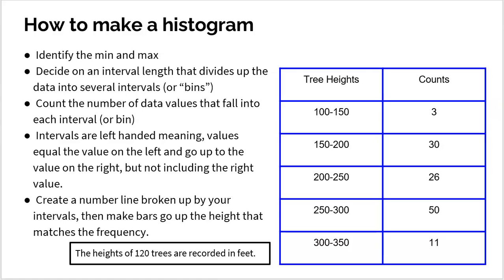For example, if I measure the heights of 120 trees in feet, I get my minimum and maximum, and then I have to decide how to separate that spread into intervals. I don't want just two intervals because that's only two bars — too small. So I decide to go by 50s: 100 to 150, 150 to 200, 200 to 250, 250 to 300, 300 to 350.